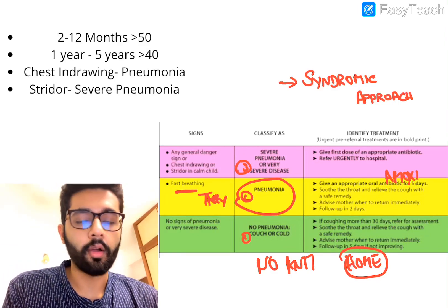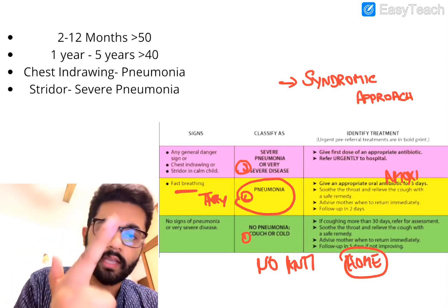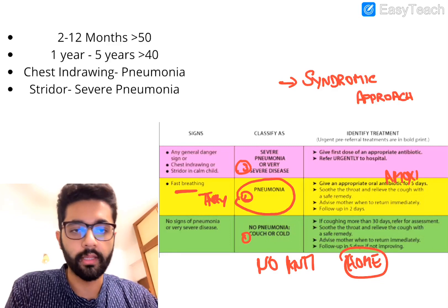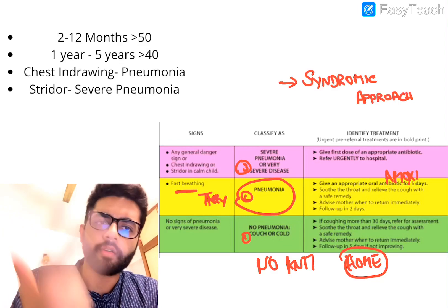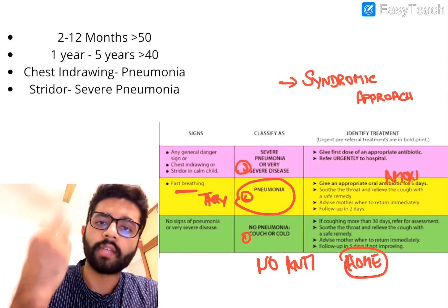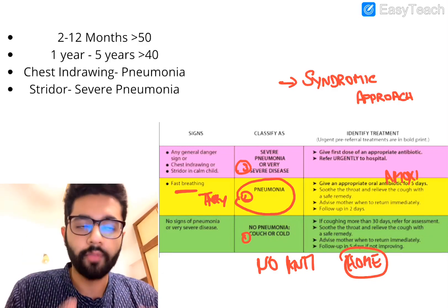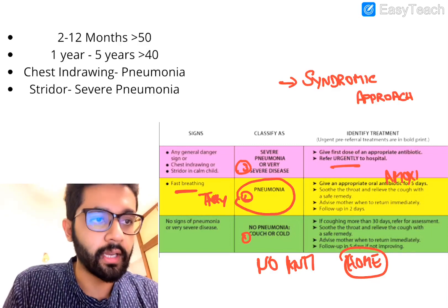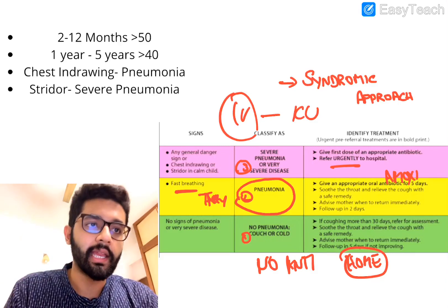The third category is pink or severe pneumonia. This includes children with stridor, malnutrition, or any of the danger signs such as seizures, inability to feed, lethargy, and convulsions. These children require IV antibiotics and ICU admission. If in the periphery, refer to a higher center immediately. If in a tertiary center, admit to ICU and give supportive care.